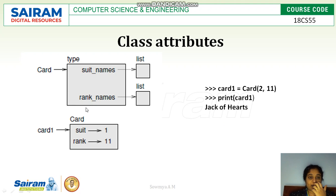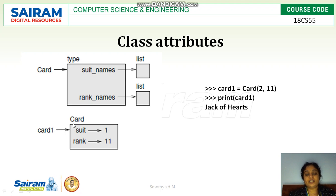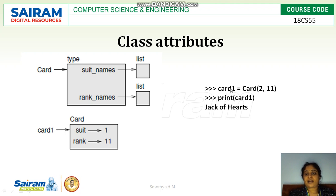The class Card has suit_names and rank_names as class attributes stored in lists. If you create an object card1 with suit 1 and rank 11, the card will represent Jack of Hearts. Based on this approach, we can create multiple objects for each and every card.